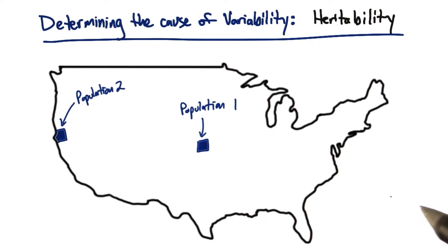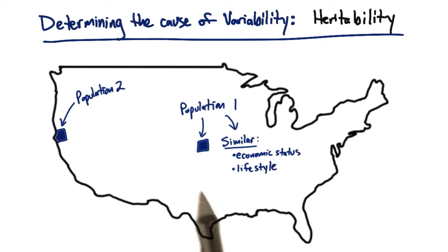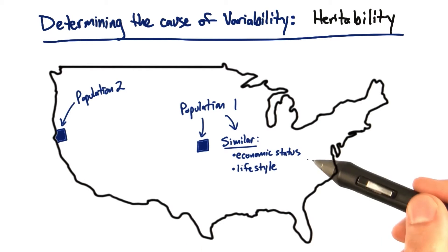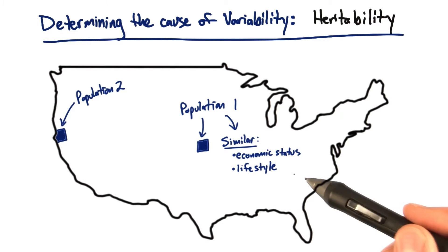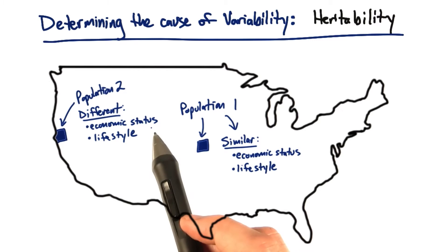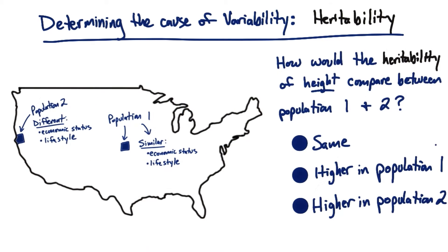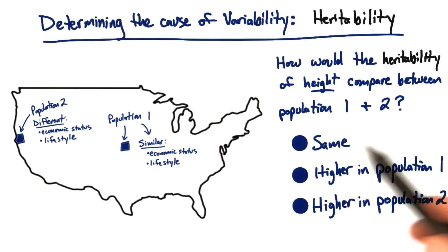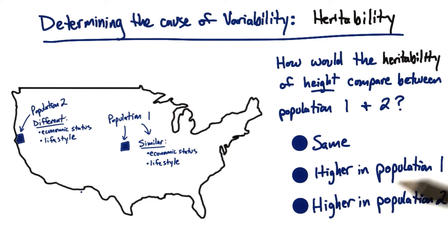Let's take a look at our example of height again. Suppose we're measuring height in two different parts of the United States. In the first population, everyone has a very similar economic status, and thus a very similar lifestyle. But in the second population, people vary a lot in their economic status and their resulting lifestyles. How would the heritability of height compare between population 1 and 2? Would it be the same, higher in population 1, or higher in population 2? Remember, heritability is measured on a scale from 0 to 1.